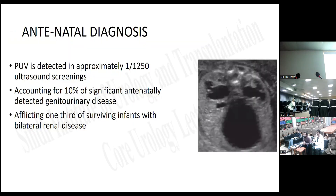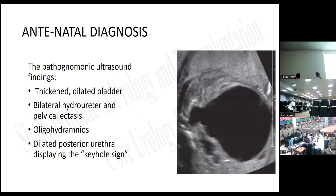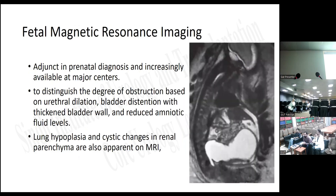Regarding antenatal diagnosis: posterior valve is detected in approximately 1 in 1,250 ultrasound screenings, accounting for 10% of significantly antenatally detected urinary disease, afflicting one third of surviving infants with bilateral urinary disease. The pathognomonic ultrasound findings are thickened dilated bladder, bilateral hydroureter and pelvic ectasia, oligohydramnios, and dilated posterior urethra displaying the keyhole sign.